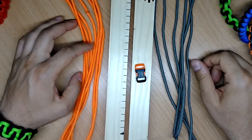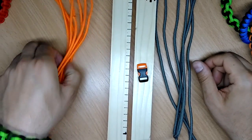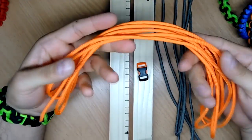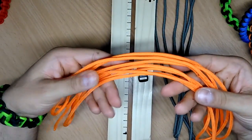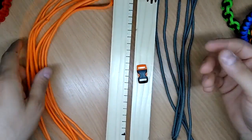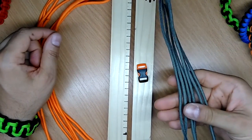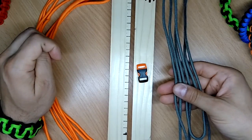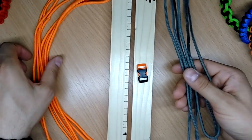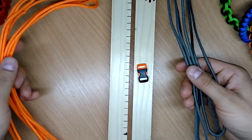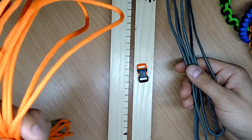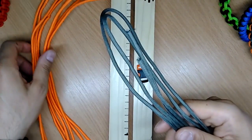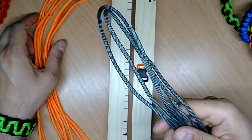For today's bracelet we're gonna need the orange paracord, total length 9 feet 10 inches, neon orange. And we're also gonna need the gray one, length 6 feet and 6 inches. So in metric measurement it will be the orange 3 meters or 300 centimeters and this gray one will be 2 meters or 200 centimeters.